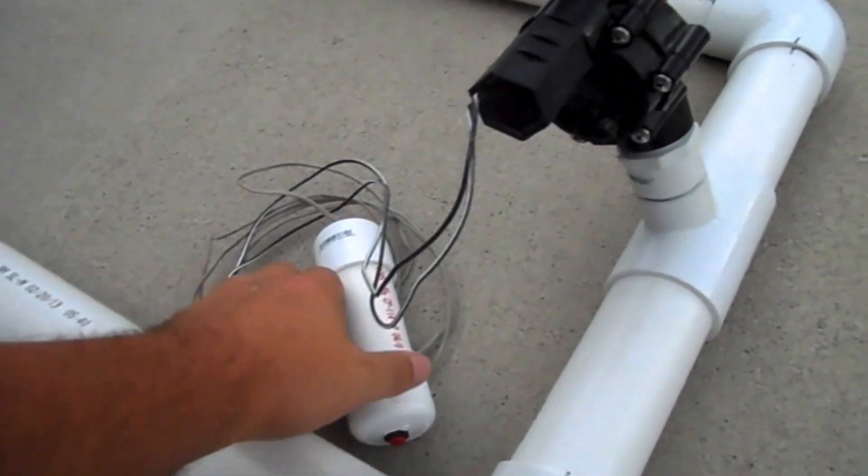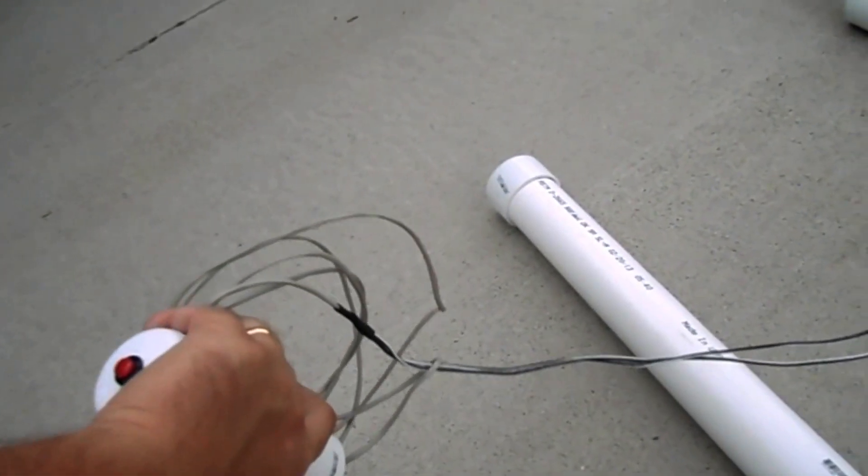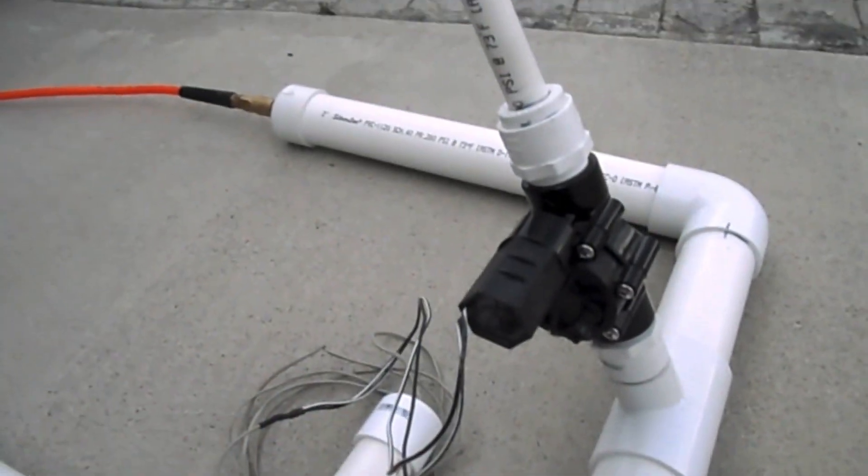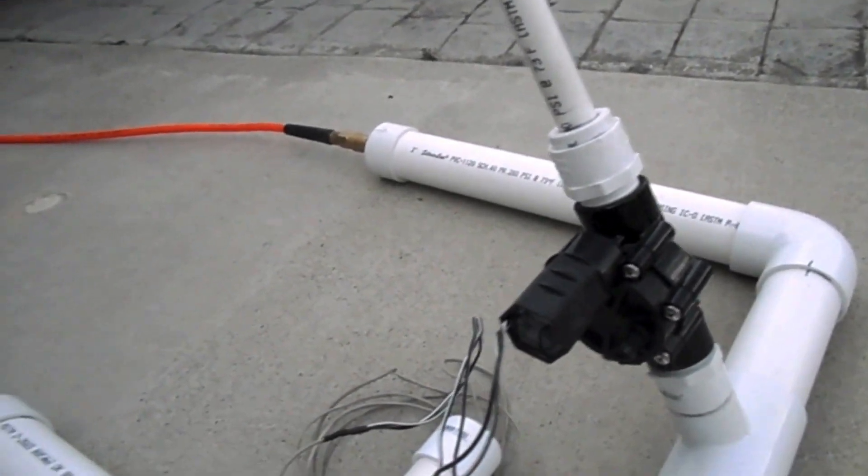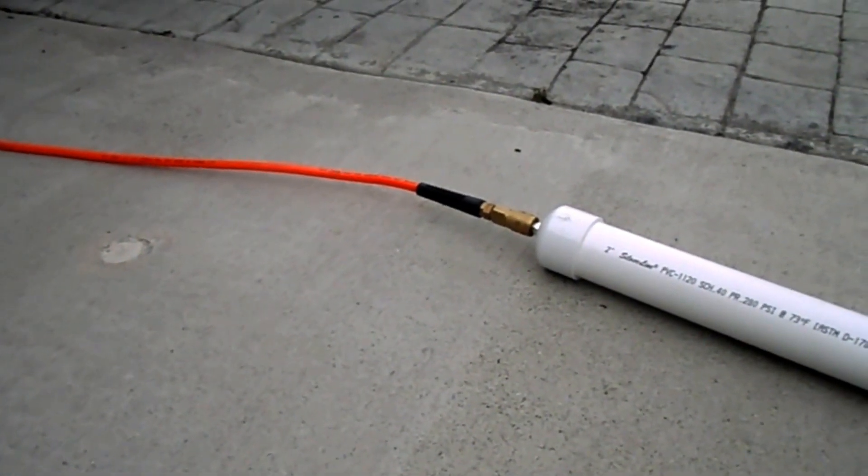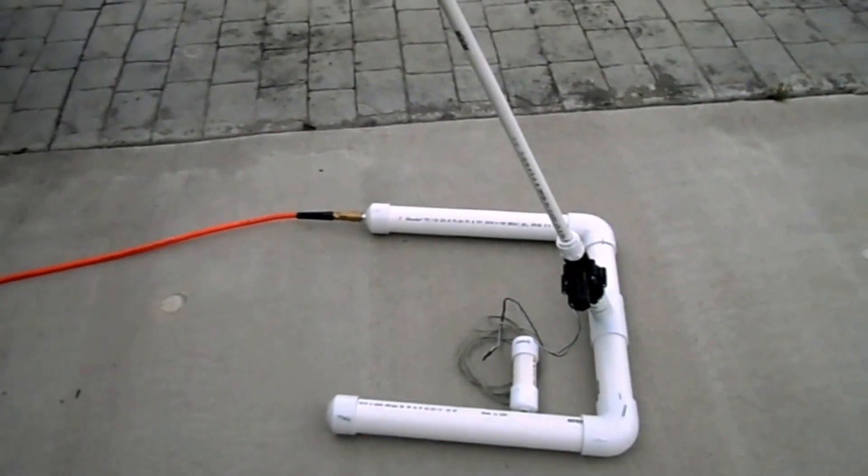You can see I've wired the other end of my trigger wire to the wires that come out of the sprinkler valve. I've got my air hose connected over here. I use about 30 to 60 pounds of air, which I set on my compressor.